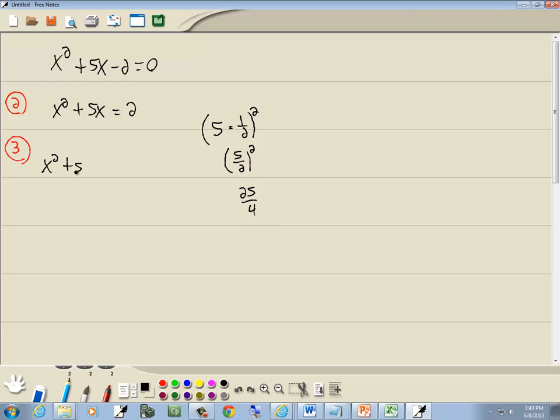So I've got x squared plus 5x plus 25 over 4 is equal to 2 plus 25 over 4.